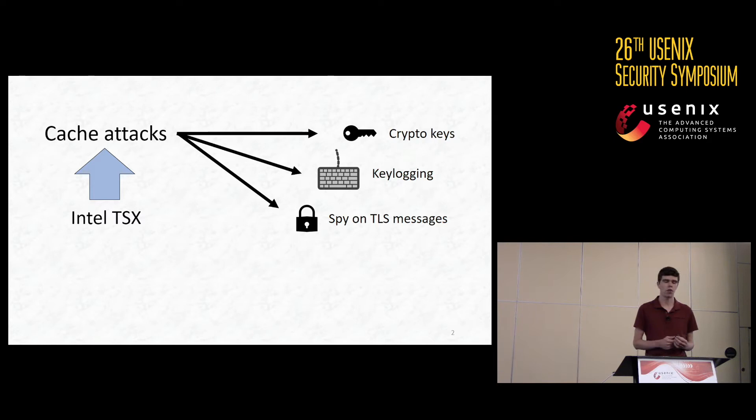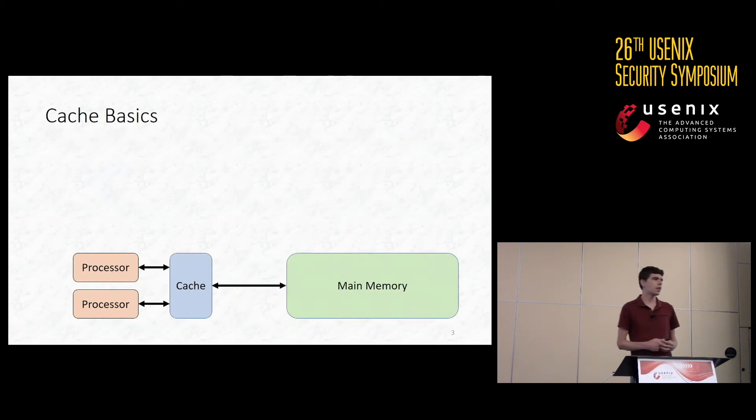Instead, our new attack leverages Intel TSX, which is Intel's implementation of hardware transactional memory, in order to create a cache attack that does not rely on timing information at all. The resulting cache attack we call Prime and Abort.